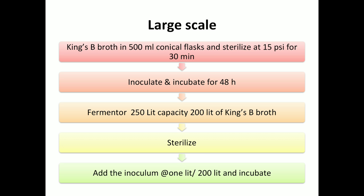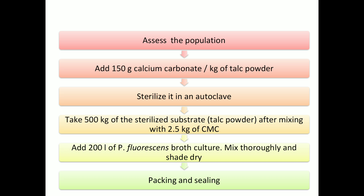For large scale mass multiplication, it can be done in a fermenter — these come in different sizes and capacities. First, prepare King's B broth in a 500 ml conical flask and sterilize it at 15 psi for 30 minutes. Then inoculate with a loopful of bacterial culture and incubate for 48 hours. For a fermenter of 250-liter capacity, 200 liters of King's B broth media is prepared and sterilized in the fermenter itself.